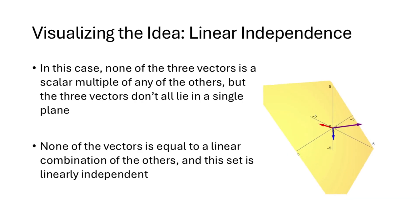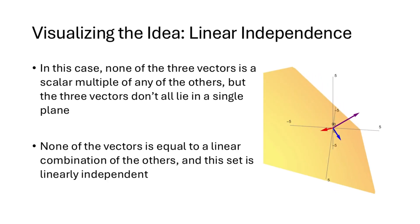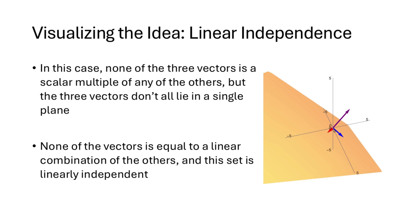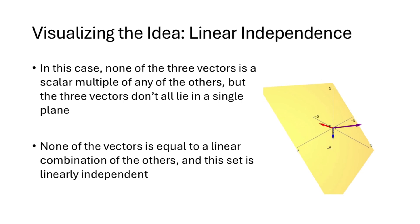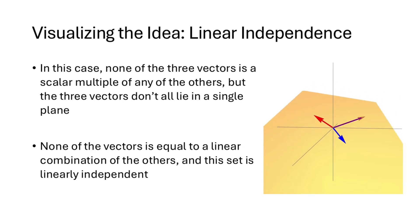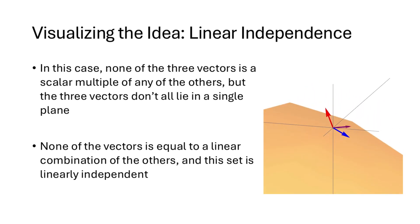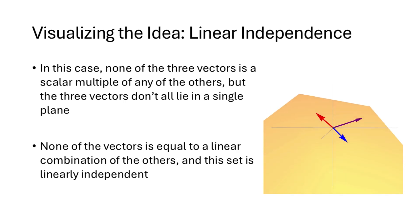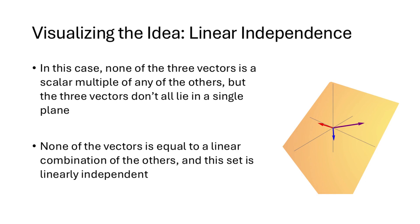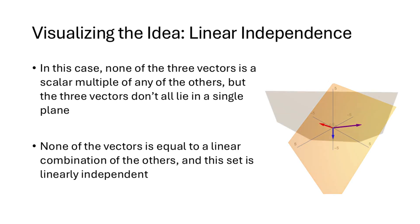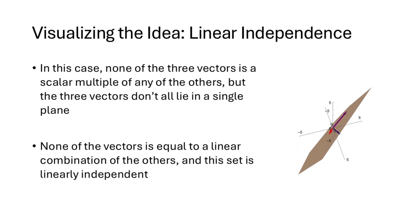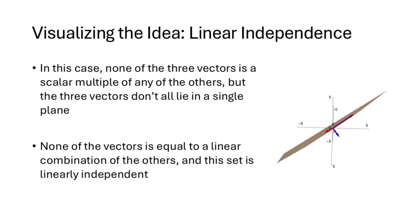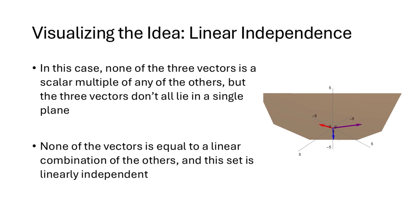In this second example, again we have three vectors in R3 that all point in different directions, but this time they do not all lie in a single plane. The purple vector does not lie in the plane spanned by the blue and red vectors, the red vector does not lie in the plane spanned by the blue and purple vectors, and the blue vector doesn't lie in the plane spanned by the red and purple vectors. That means none of these vectors is a linear combination of the others, so there's no dependence relation — this set is linearly independent. Even if none of the vectors is a multiple of any of the others, the set could be linearly dependent or independent, and we need further investigation.